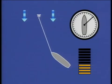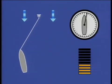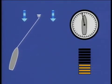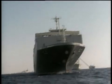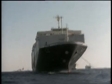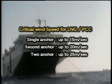This moment may be deduced from the change of relative direction of the wind on the navigation bridge. The anchor drags when it loses its grip on the bottom and starts sliding over the bottom. For a PCC or an LNG carrier with a large windage area lying at a single anchor, the critical wind speed is 15 metres per second.